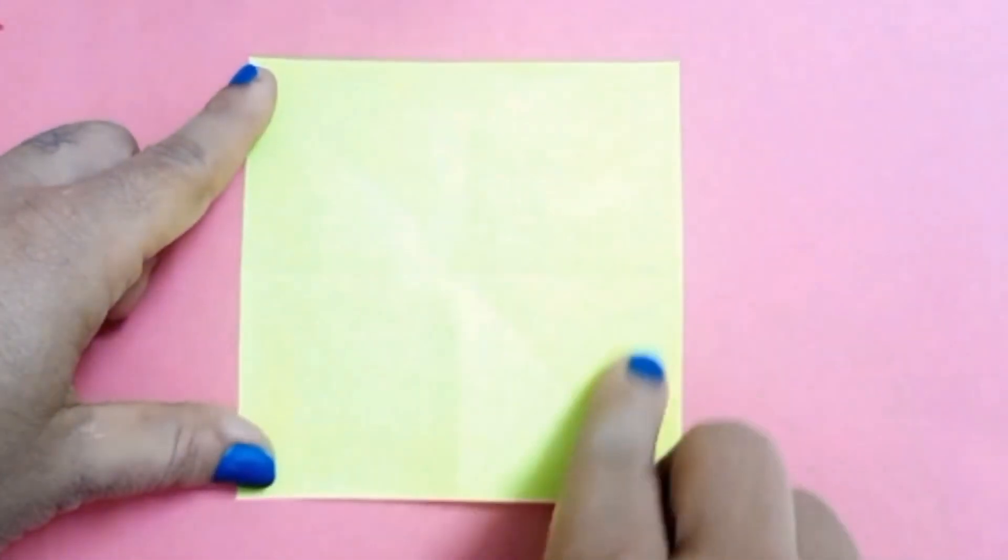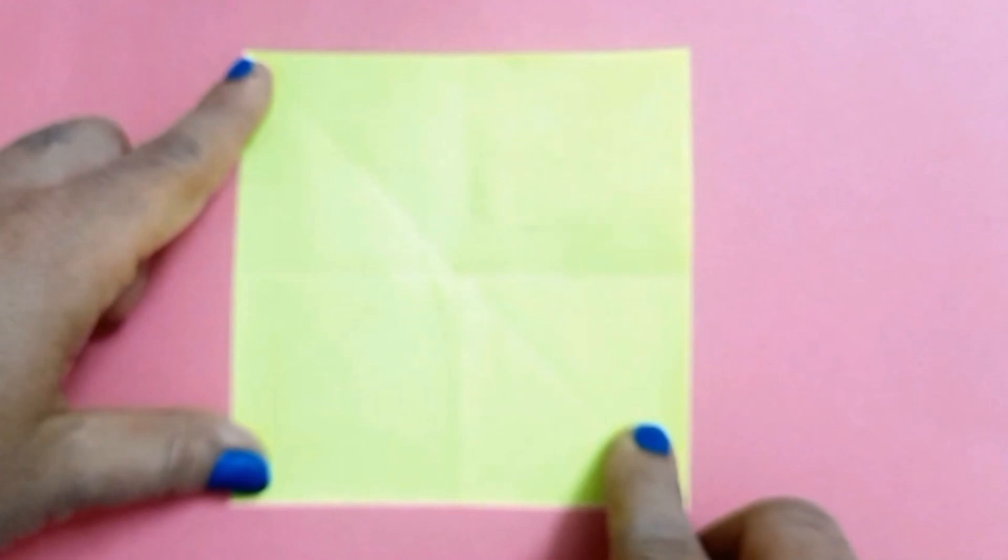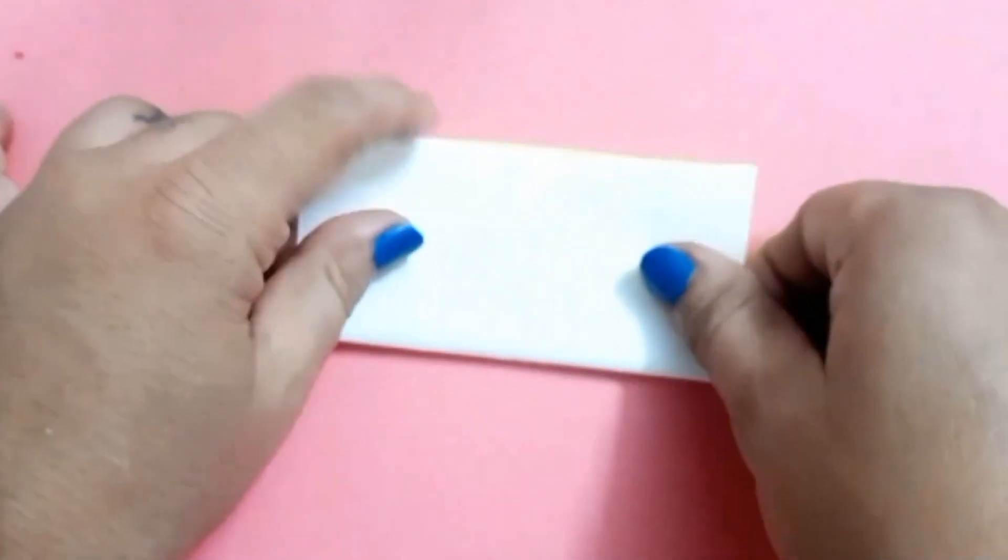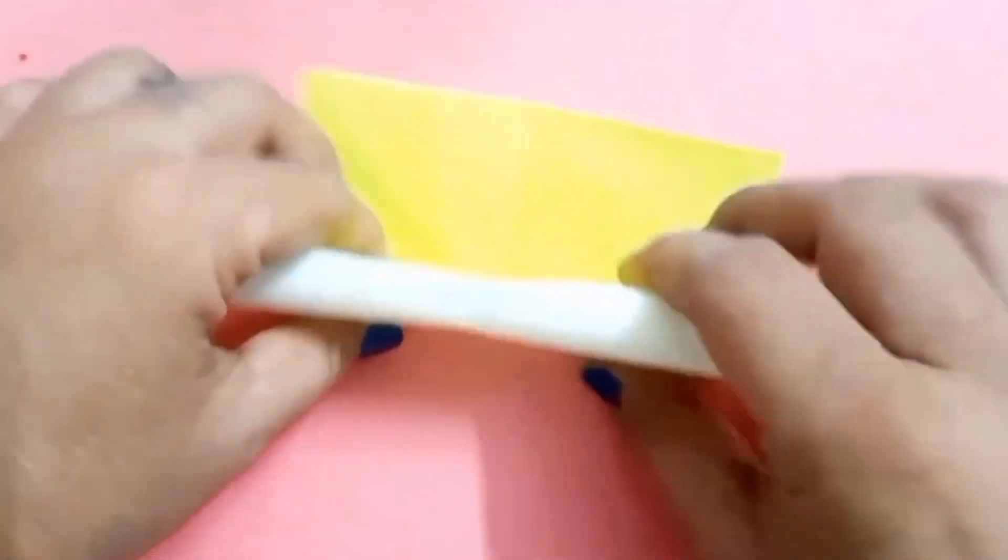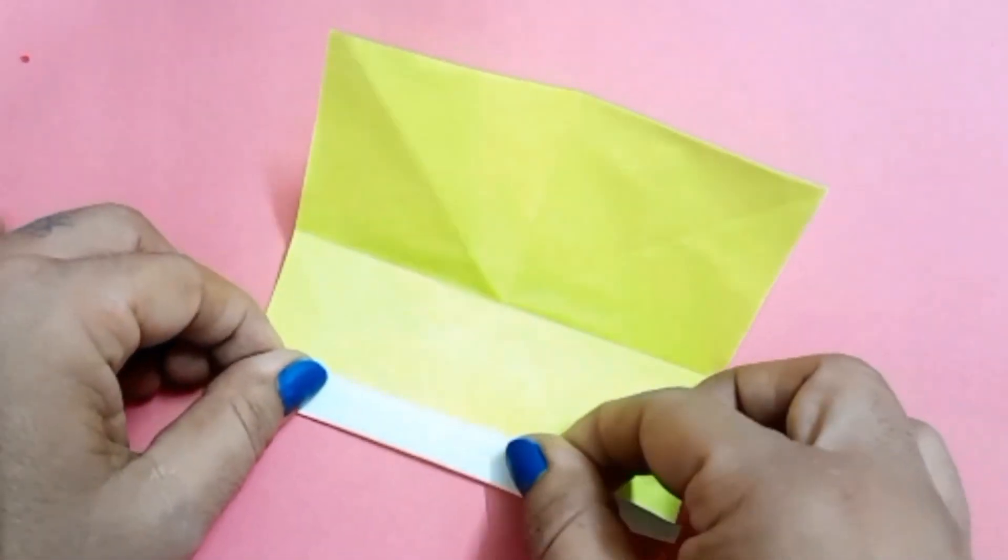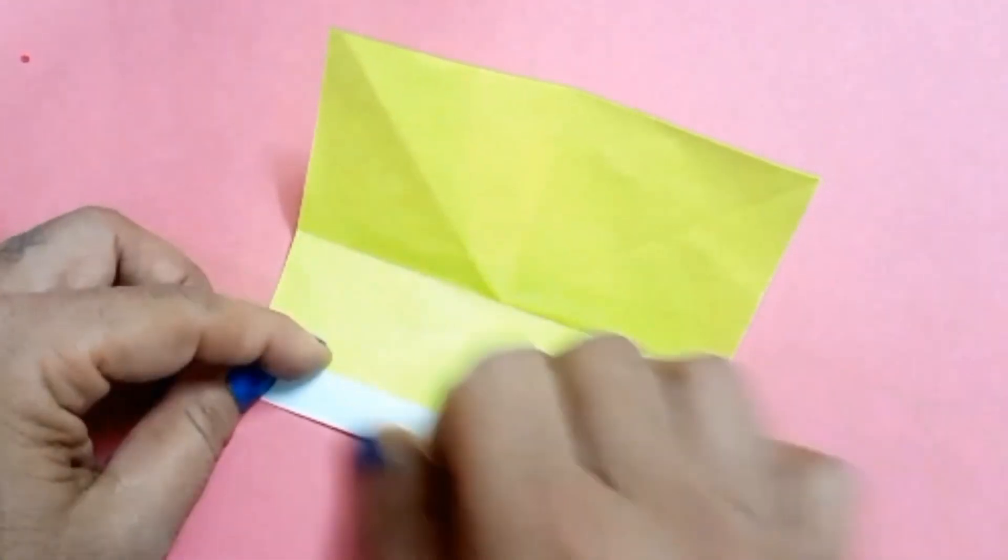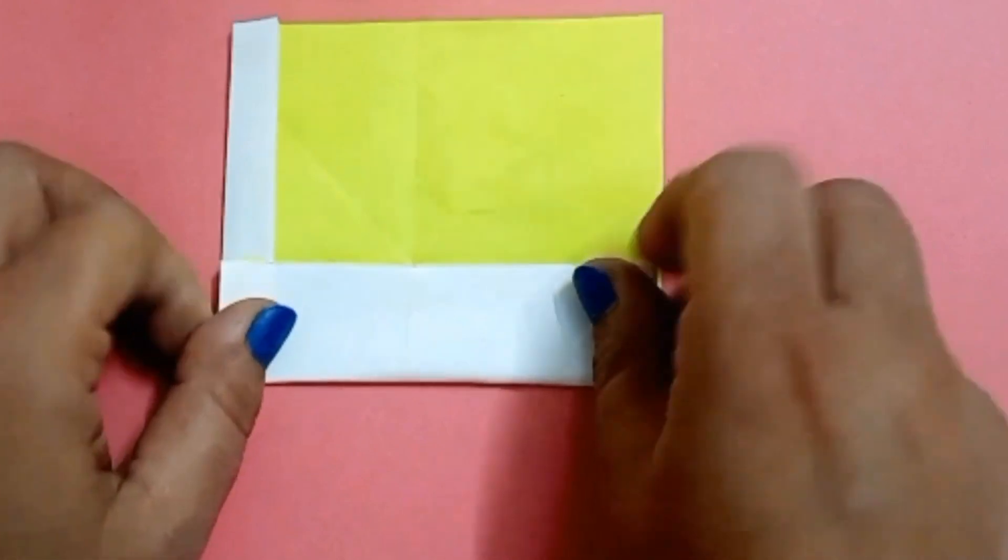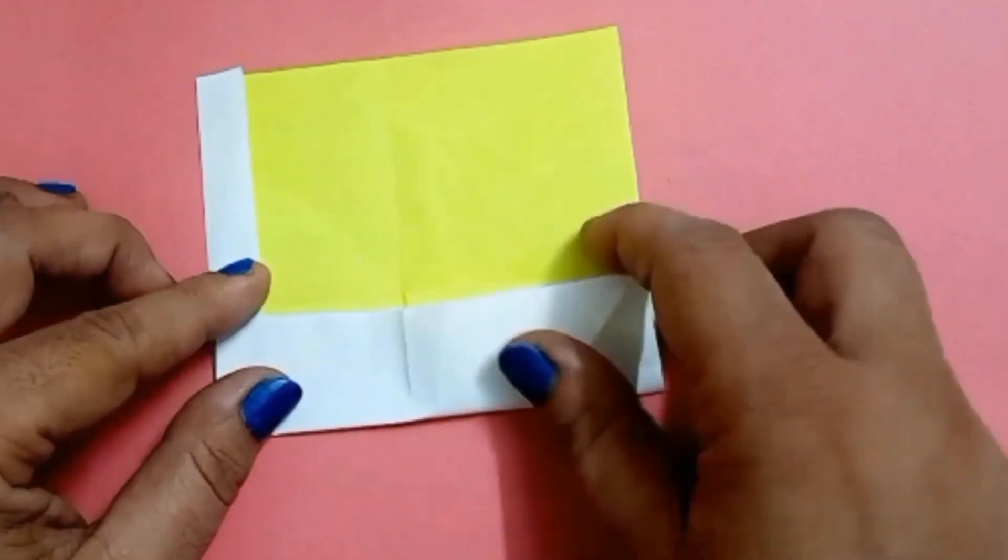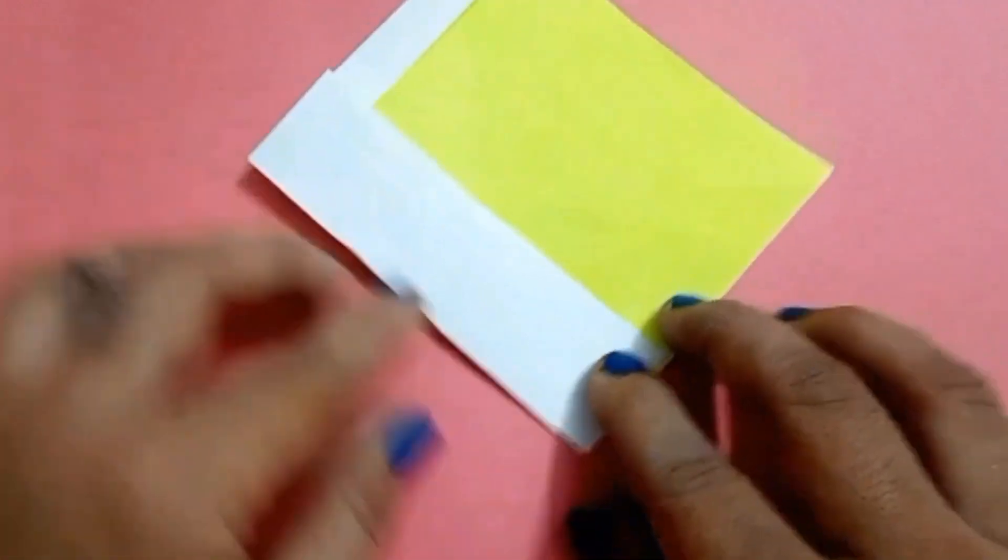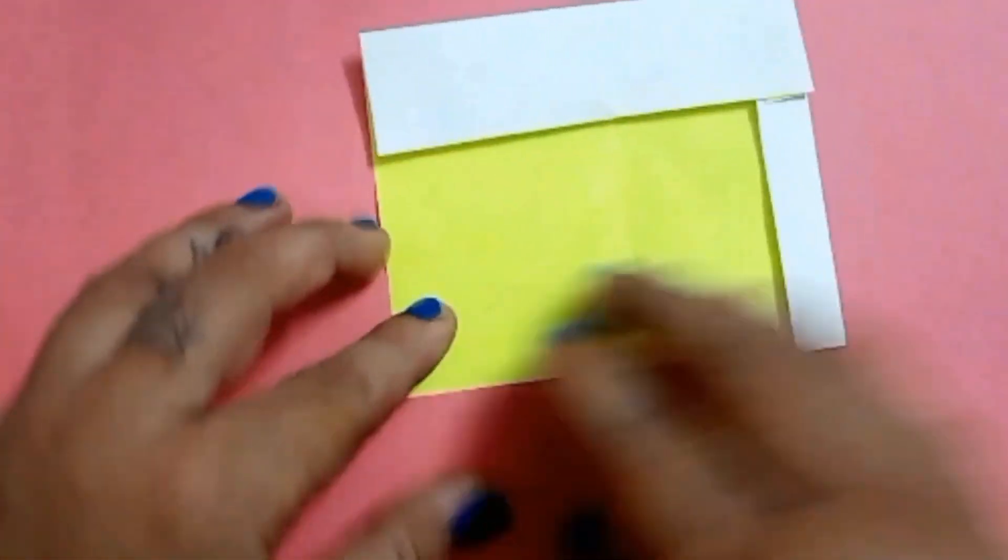To make the top, you need a square shape sheet. Fold it like this. Unfold it now. Now you have got the crease. Start folding one edge like this. And turn the paper and fold the other edge to the center crease. Change the direction and fold the other side also.